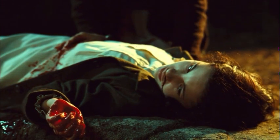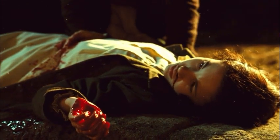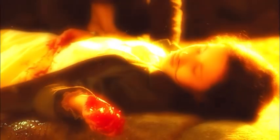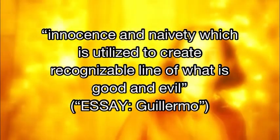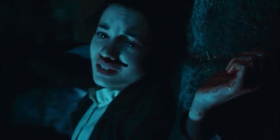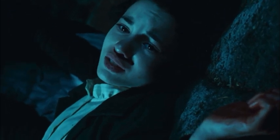Reinforcing Ophelia's role as a victim, it is revealed that Ophelia has the blood of the innocent when she enters the kingdom. Del Toro associates her with innocence and naivety, which is utilized to create a recognizable line between what is good and evil. In addition, Ophelia's death is present at the very start of the picture, setting up the tone for the directorial critique. With the tense soundtrack combined with Ophelia's breath, from the start Del Toro makes the film more brutal, unlike Burton's fairy tale.